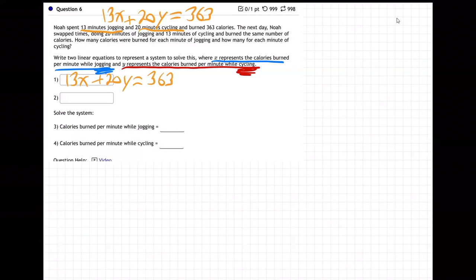And then the second equation, next day, 20 minutes jogging, that's 20X plus 13 minutes cycling and burned same number, same number as that. So 363. So 20X plus 13Y is also 363. So there's our two equations.